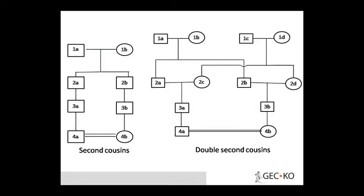The first degree relatives include real chacha, real tau, real bhua, and real mama — that is, my mother's children. If I am having a union with them, that is considered first degree. Double second cousins also produce that kind of close relation.